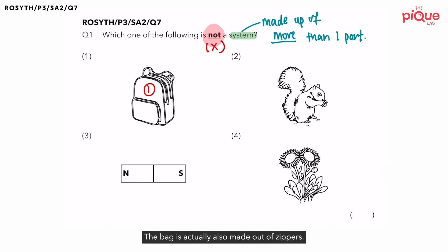So based on the annotation, can you tell me how many parts is the bag made up of? The bag is made up of more than one part. So if the bag is made up of more than one part, is it a system?